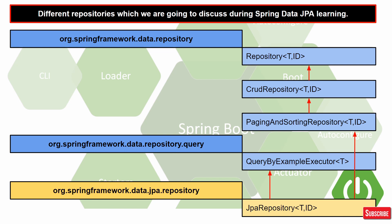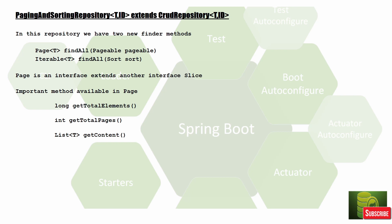Based on your requirement you can go with JpaRepository. In this part three video we are mainly focusing on PagingAndSortingRepository. PagingAndSortingRepository extends CrudRepository and has two new finder methods: one takes a Pageable and returns a Page, and the second takes a Sort and returns an Iterable.